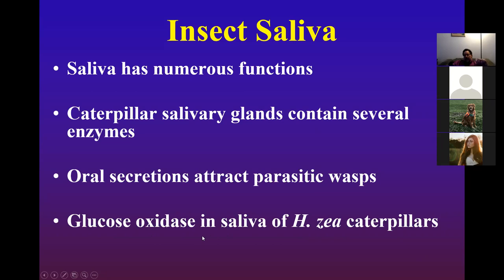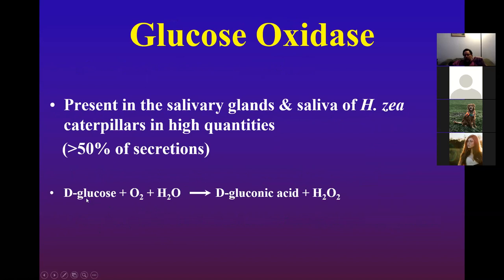Glucose oxidase is an enzyme found in caterpillar saliva, but it's not just found there — bees and fungi also make glucose oxidase, and you can buy it purified off the shelf from Sigma Chemical Company. This enzyme converts glucose, oxygen, and water — those are the reactants — into gluconic acid and hydrogen peroxide. So when the caterpillar spits on a plant, it can convert the glucose into gluconic acid and hydrogen peroxide.